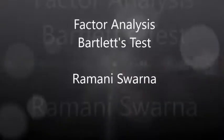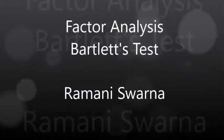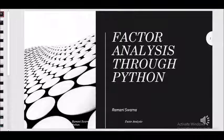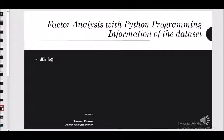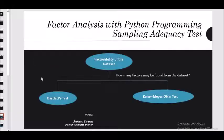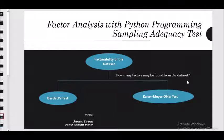Good evening to all. Let's proceed further with the adequacy test, wherein I need to find out whether I can really get some kind of factors from my data set or not. The technical term used here is factorability. Under the adequacy test, one of the steps is to find out the factorability — whether certain factors can be found in the data set or not.